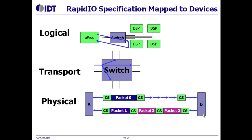This chart shows a little bit about how the RapidIO specification is mapped to actual devices. The RapidIO ecosystem consists of two kinds of devices: endpoints and switches. Endpoints are devices that originate and process packets. Switches route packets to endpoints. You can understand that the logical layer specification largely applies to endpoints. In this chart, there is an example of a microprocessor sending a request to a DSP and receiving a response.